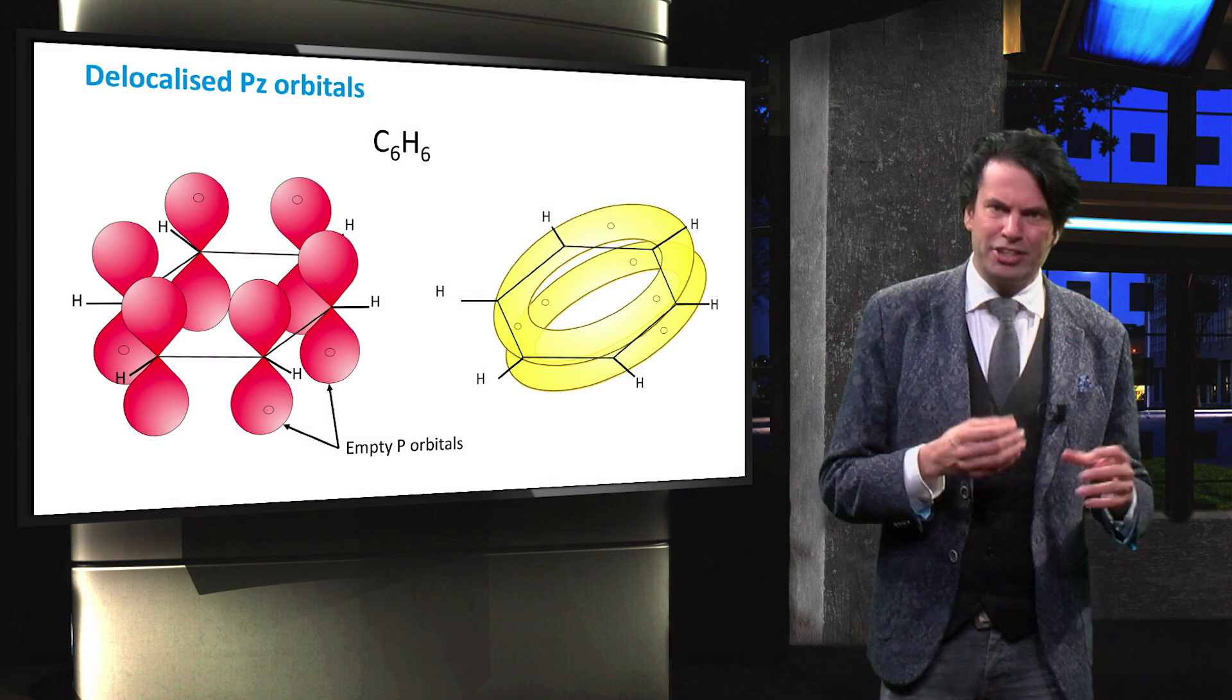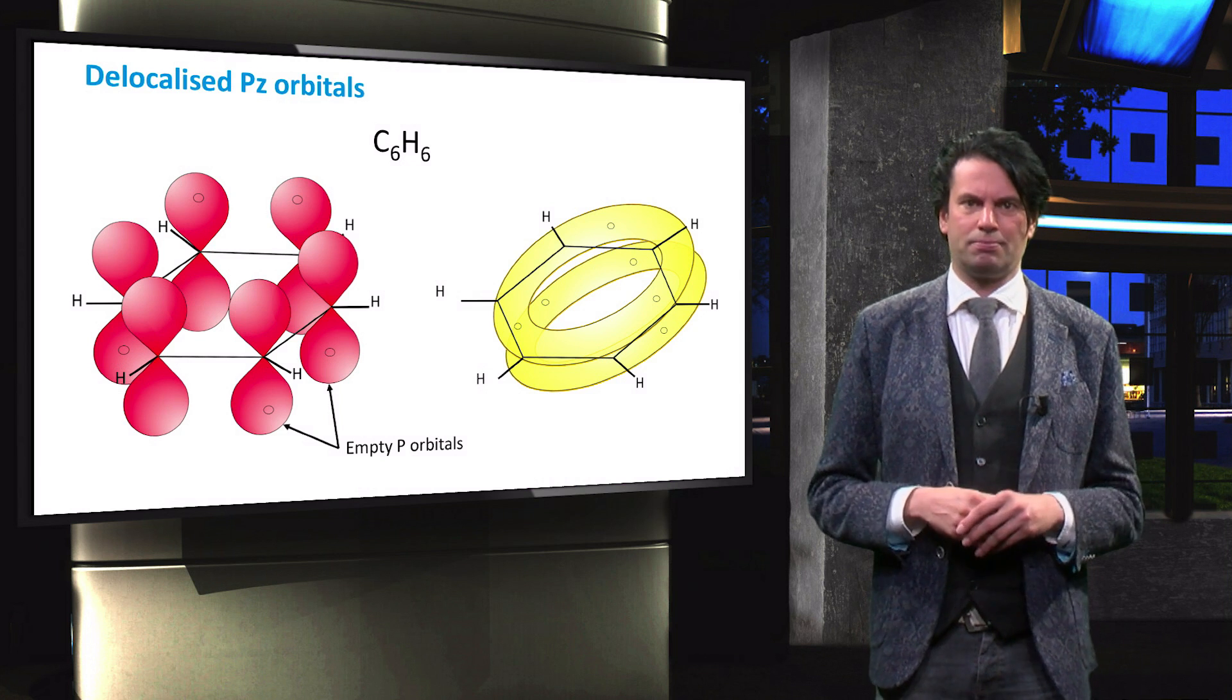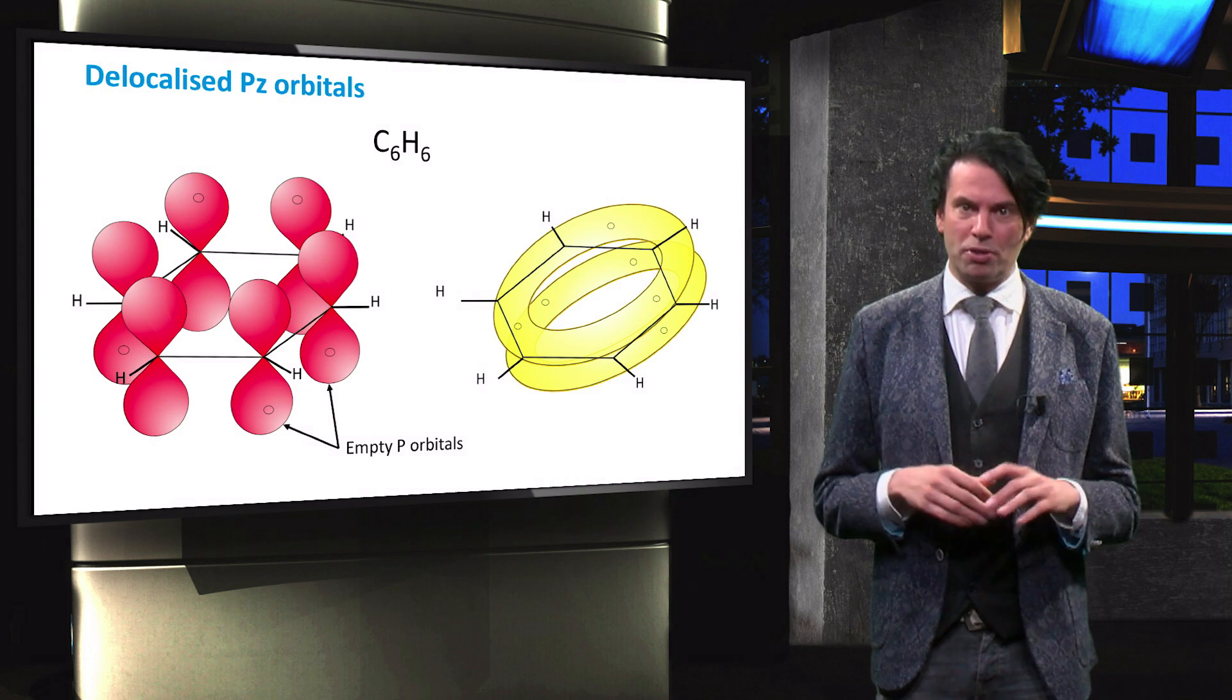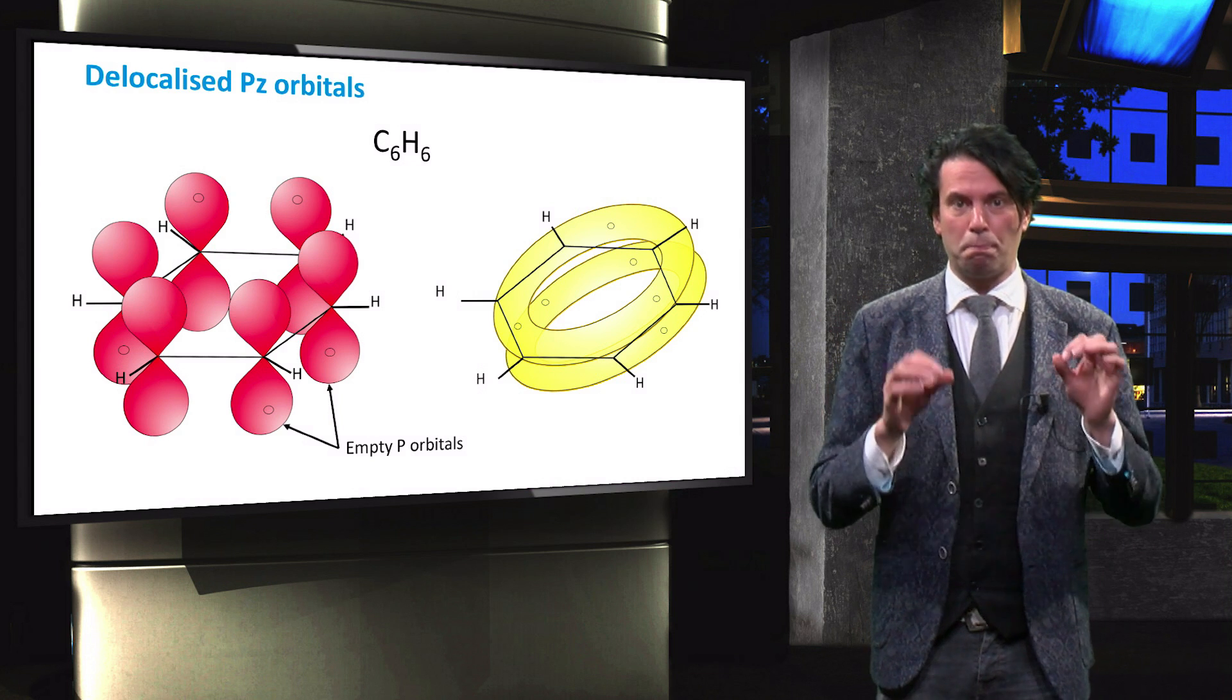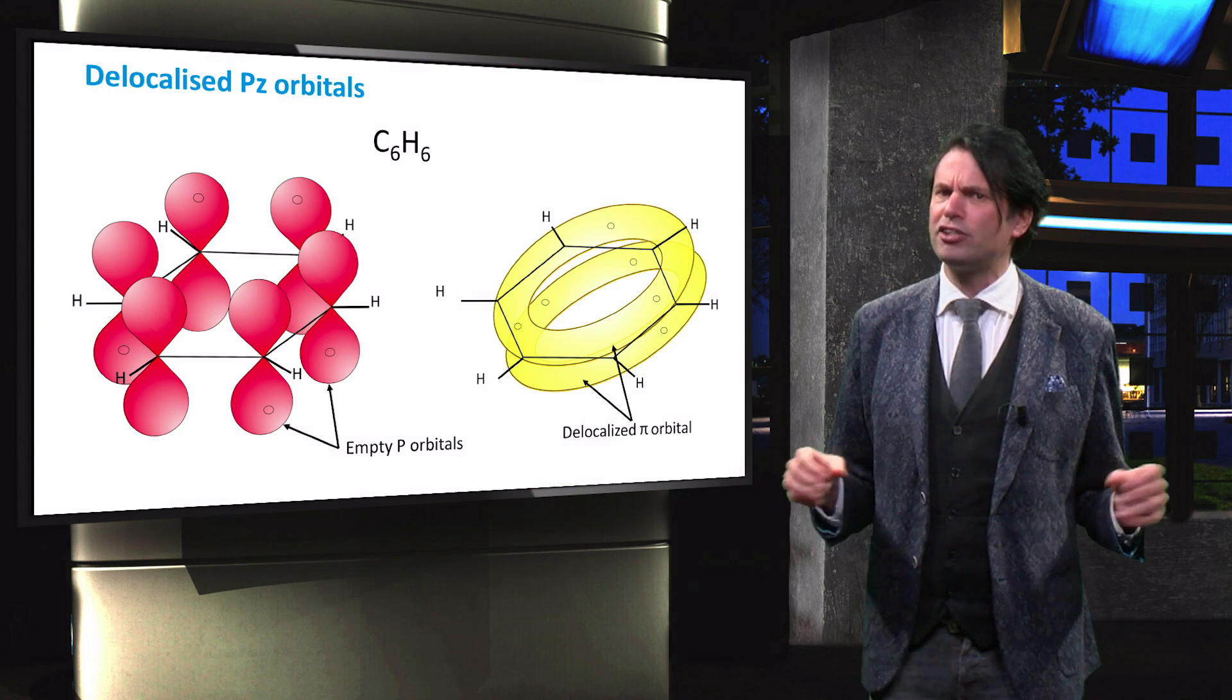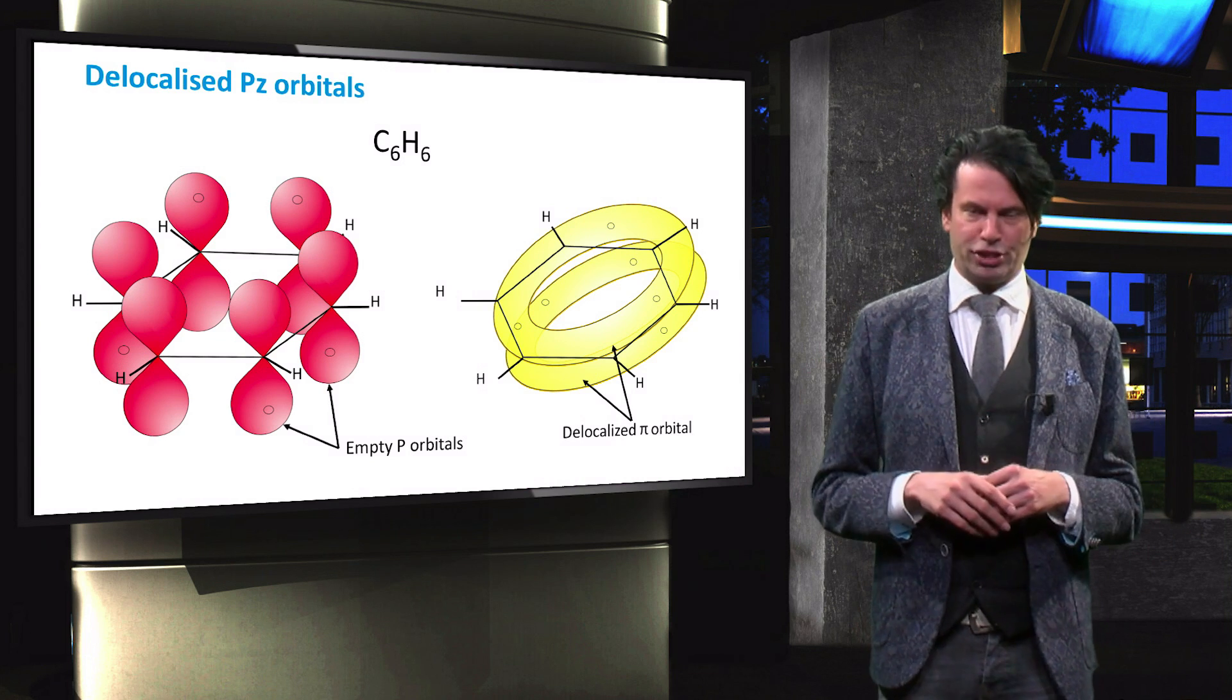Due to their unbonded nature, the p orbitals of the carbon atoms will start to intermix. This intermixing of these empty pz orbitals therefore results in the formation of one big delocalized pi orbital. This delocalization of the pz orbitals allows for the free movement of charge carriers.